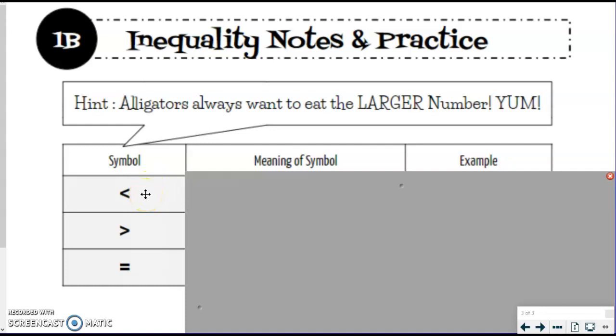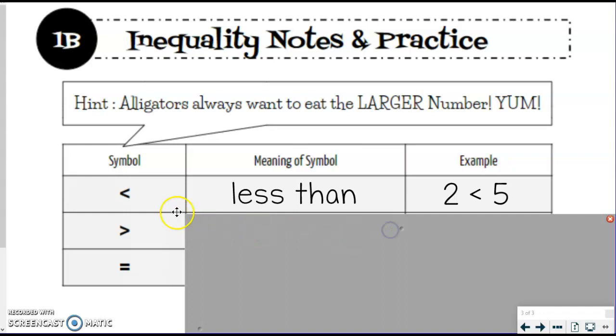So we're going to start with this first symbol right here. And it is called the less than symbol. We read it left to right. So if you notice, if I take this example over here, and you should be writing these in your notes so that you are ready to go for the next part. We are reading it left to right. So we're reading 2 is less than, so notice that smaller side came first here, is less than 5. So the mouth is facing the bigger number. That's how you want to look at it.